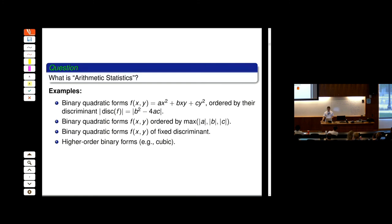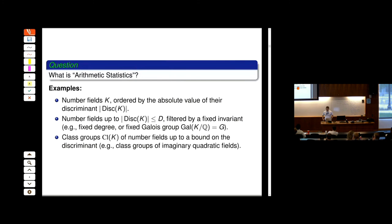What about number fields? They have a natural size — the absolute value of their discriminant. If you've had some number theory, you know that the discriminant measures, for instance, how many bad primes there are — what primes ramify in that number field. So we can count number fields up to a given discriminant, and we want to know how many number fields there are up to a given discriminant with a fixed degree or a fixed Galois group. Out of those number fields, we're very interested in their class groups — how far the ring of integers is from being a unique factorization domain or a PID.